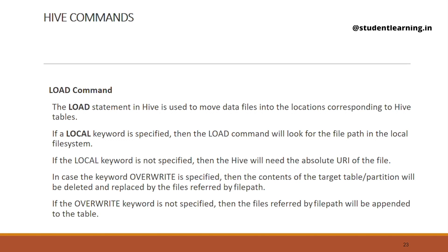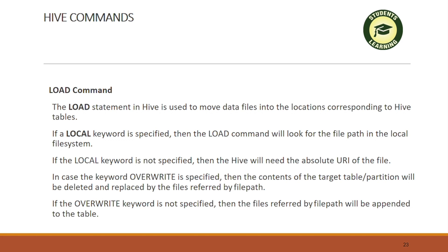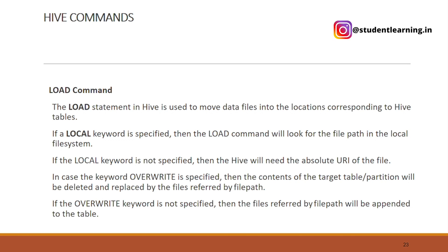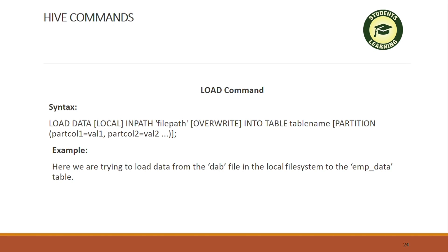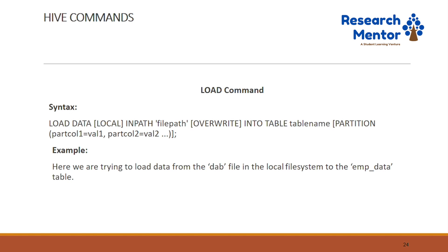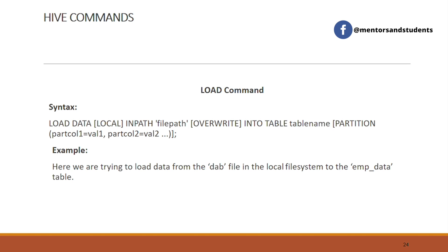The load command in Hive is used to move a data file into a location corresponding to a Hive table. If the LOCAL keyword is specified, the load command will look for the file path in the local file system. If LOCAL is not specified, Hive will need the absolute URL of the file. If the OVERWRITE keyword is specified, the content of the target table or partition will be deleted and replaced by the file. If OVERWRITE is not specified, the file will be appended to the table. Syntax: LOAD DATA [LOCAL] INPATH 'file_path' [OVERWRITE] INTO TABLE table_name [PARTITION (col1=val1, col2=val2)].